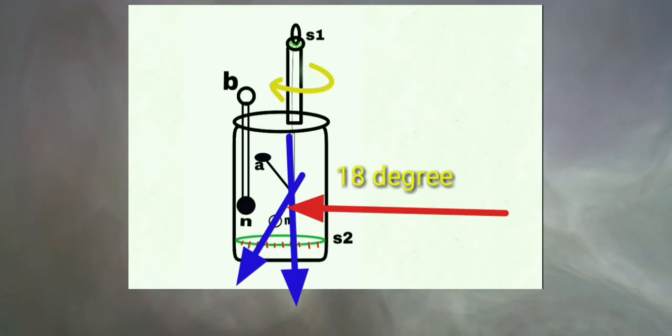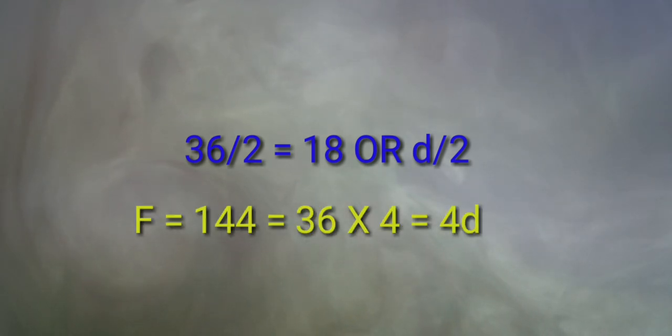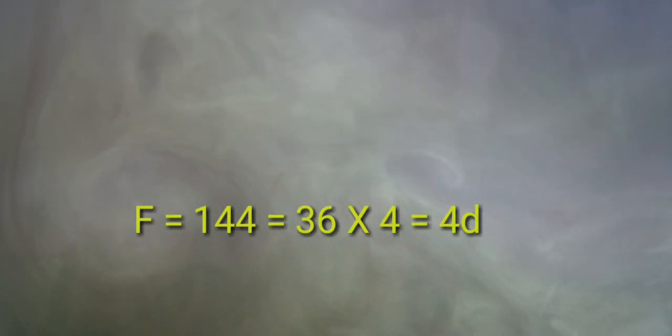To make S2 equal 18 degree, S1 was needed to rotate 126 degree. So overall twist between upper and lower ends of the wire of N pith ball was 126 plus 18 equal 144. So, from here, Coulomb said that as distance had become halved from 36 to 18, the force had become 4 times of distance which is 4 into 36 equal 144.